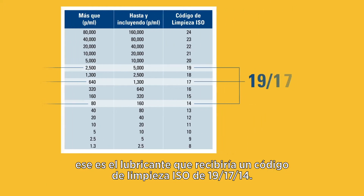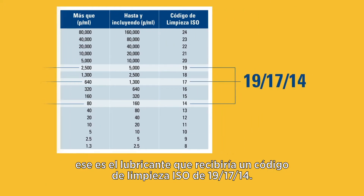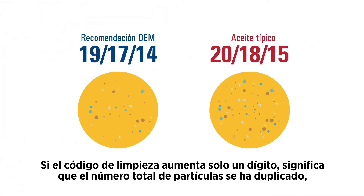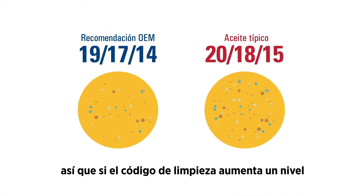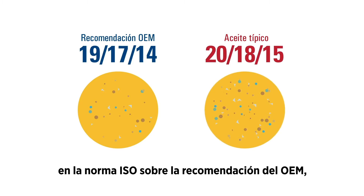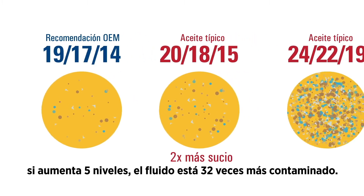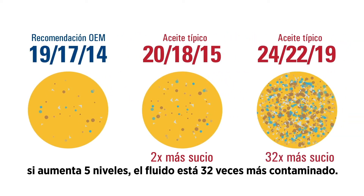Thus, the lubricant would receive an ISO cleanliness code of 19/17/14. If the cleanliness code increases by just one digit, that means the total number of particles has doubled. So if the cleanliness code rises one ISO level above the OEM recommendation, the fluid is twice as dirty as it should be.